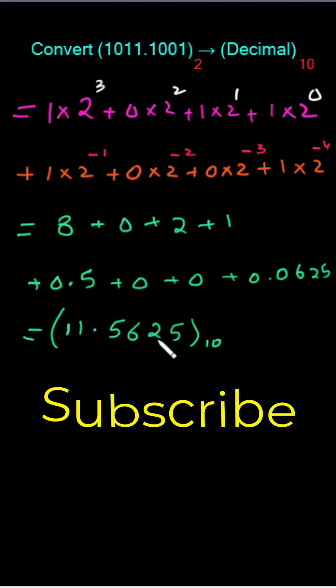Similarly, a number expressed in any base can be converted to its decimal equivalent by multiplying each coefficient, as we have done here, with its corresponding power of base and then adding.